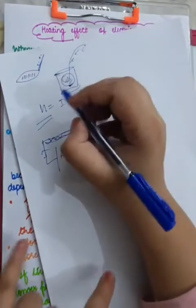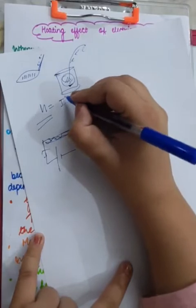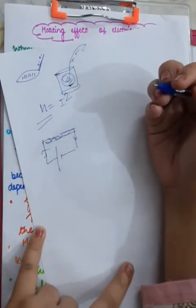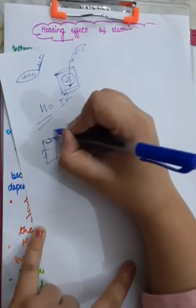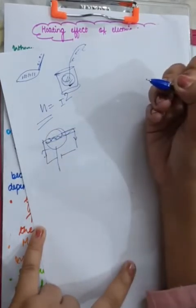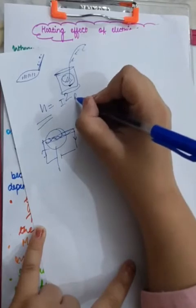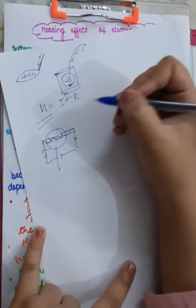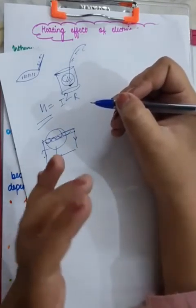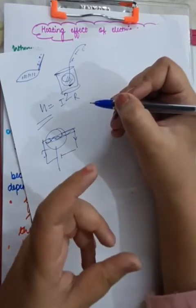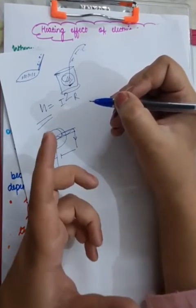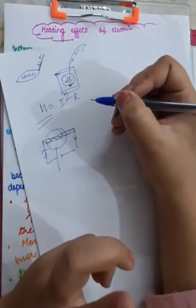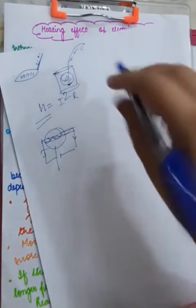So, H is dependent on I square. After that, you have the resistance. More the resistance of material, more will be the heat produced. And also dependent on the time for which you have connected a battery to the circuit. Kyunki jitna time ke liya aap battery connected rakho ga, for that time only the heat will be produced. I'll tell you why.